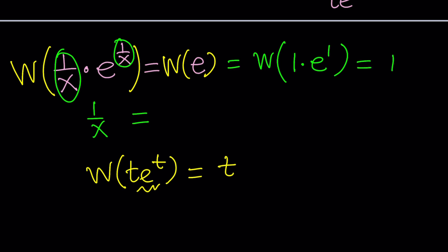w of 1 e to the 1 is just going to be 1. Because again, the t thing, t to the t, Lambert it, you're going to get t. Make sense? So this is just equal to 1,